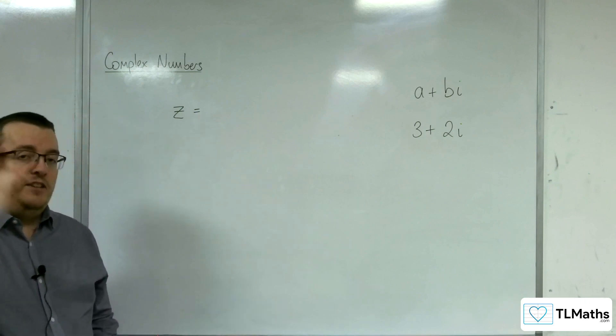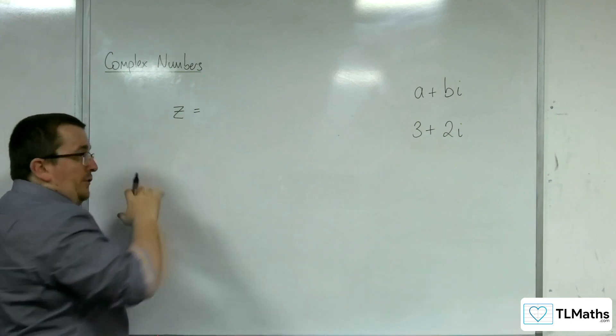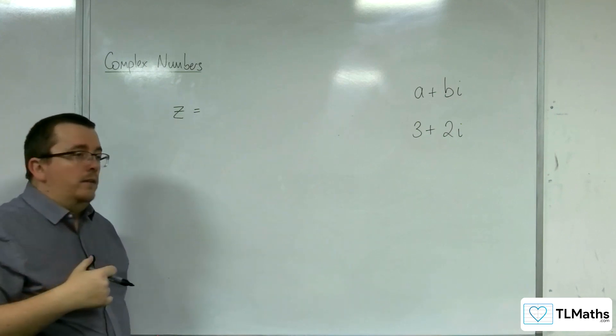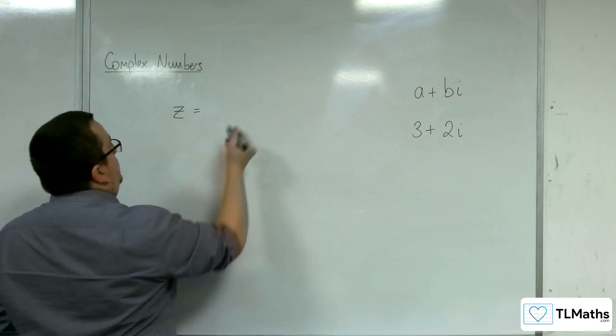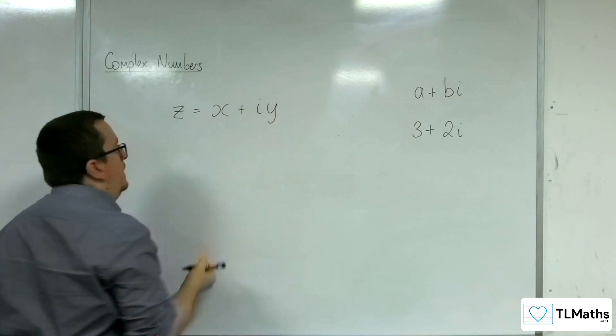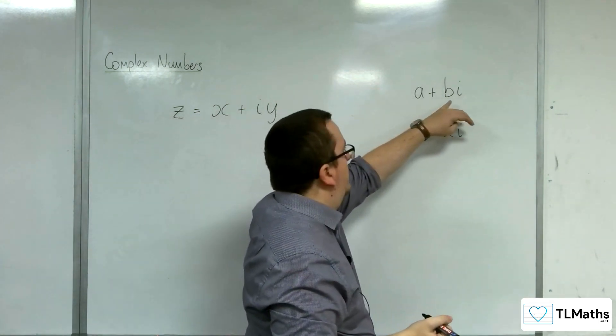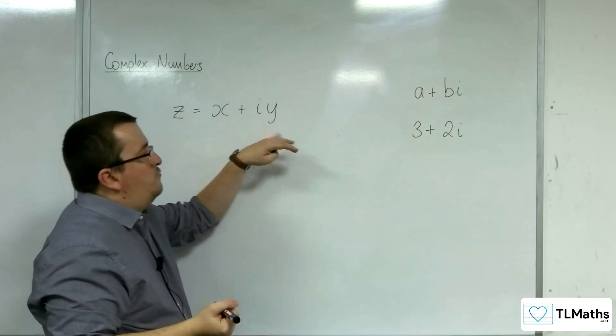So you'll see me do this throughout, and I would probably suggest that you try and adopt that as well. So z is equal to, it's often written as x plus iy. So you'll notice that sometimes how it's written is that the i is actually the other way around.